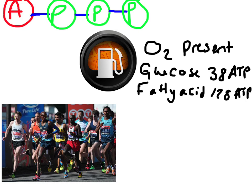The production of energy within the aerobic system is slow to engage, because it takes a few minutes for the heart to distribute the oxygenated blood around to the working muscles. It is suitable for long, continuous exercises such as marathon running.